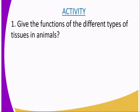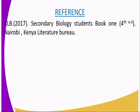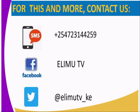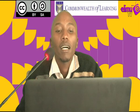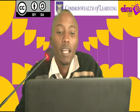Having said that, we are going to have an activity whereby you should give the functions of the different types of tissues in animals, as we have already learned. For further reference on the different types of tissues, you can refer to KLB Secondary Biology Students Book 1, fourth edition, Nairobi: Kenya Literature Bureau. For further information, you can send us an SMS or message us through our Facebook page at Elimu TV, or on Twitter at Elimu TV underscore Kenya. Thank you, and let us walk this journey together.